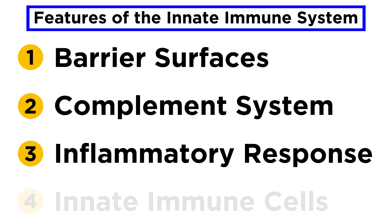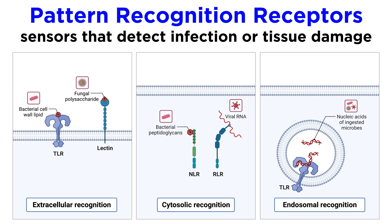So far in this series we've talked about various aspects of innate immunity, but we still have a lot to discuss regarding the actual pathways by which threats are detected by immune cells. So let's do a deep dive into pattern recognition receptors. These are protein sensors in and on cells that detect evidence of infection or tissue damage, which then launch a signaling cascade designed to deal with the threat.